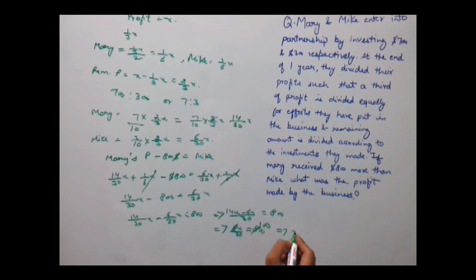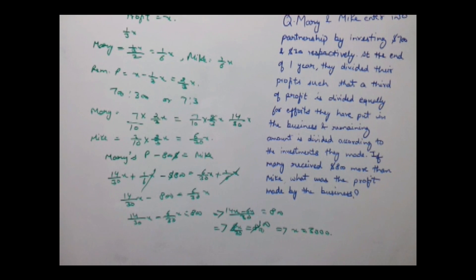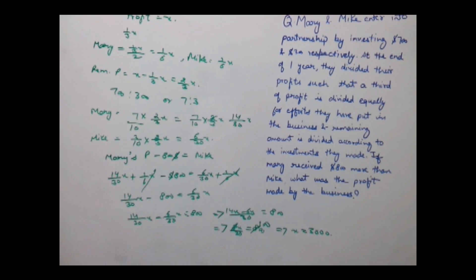Value of X is equal to 3000. So profit made by the business is $3000.